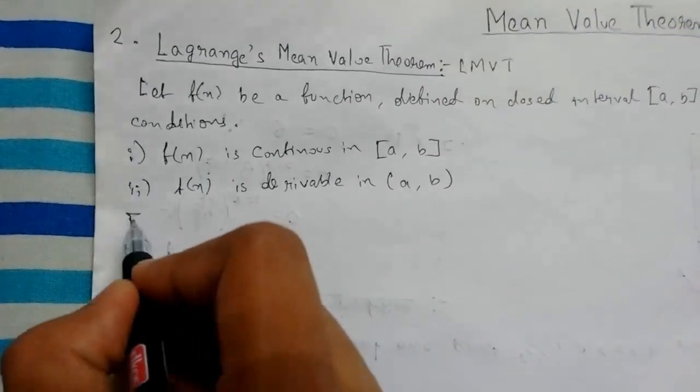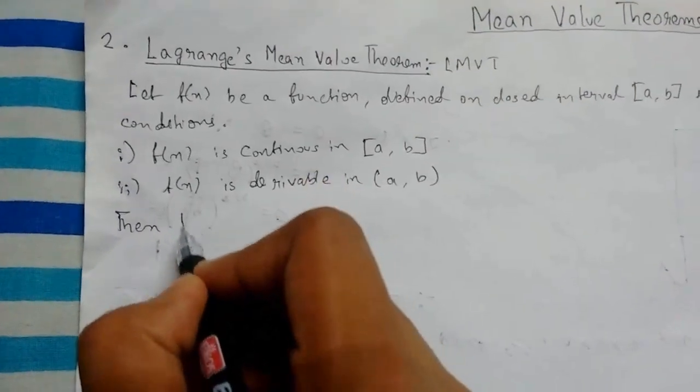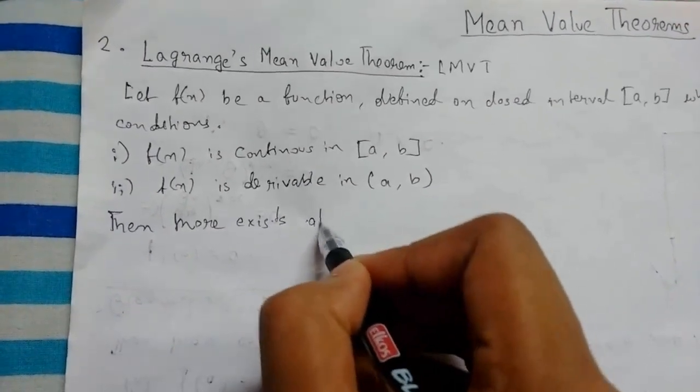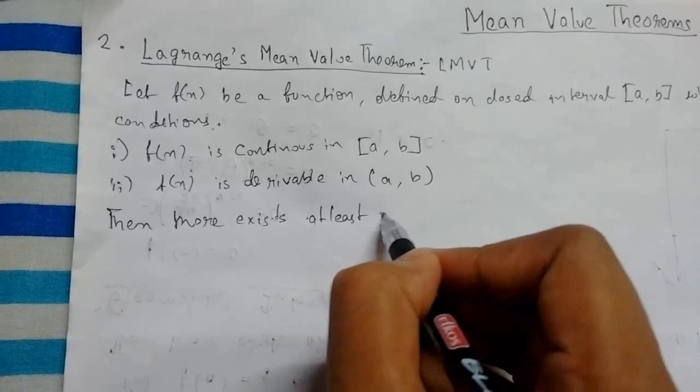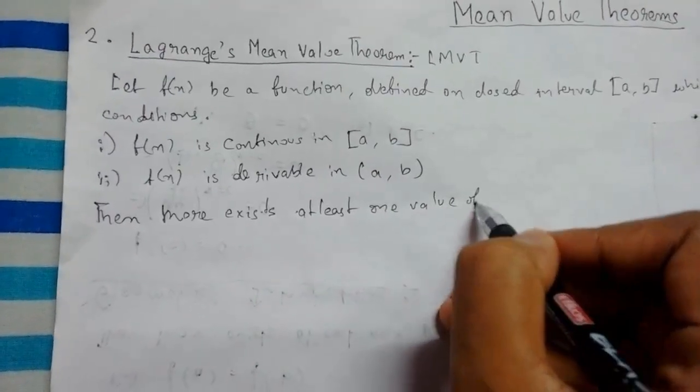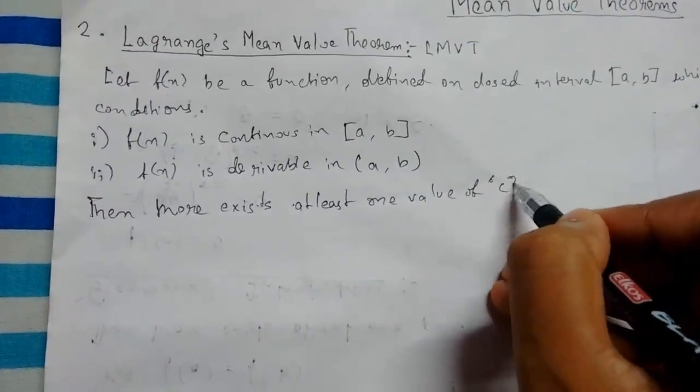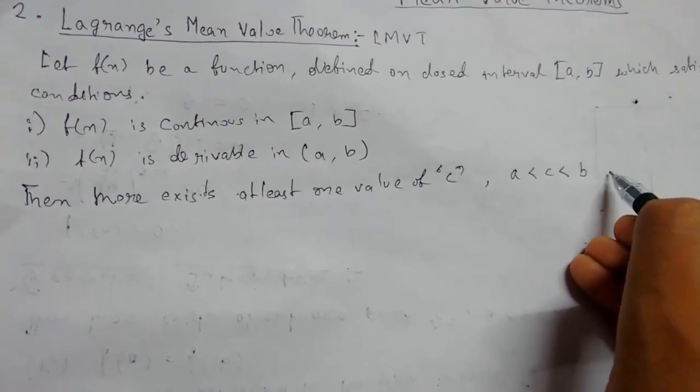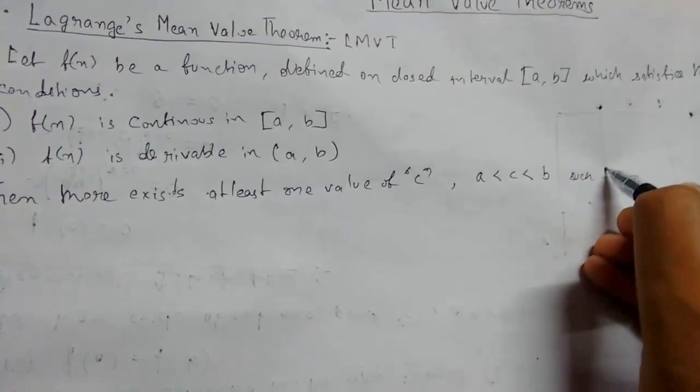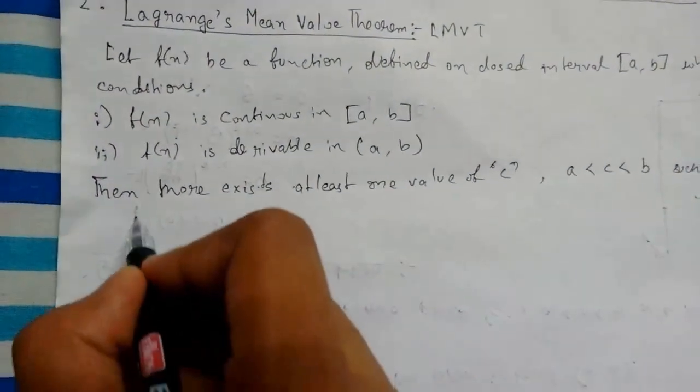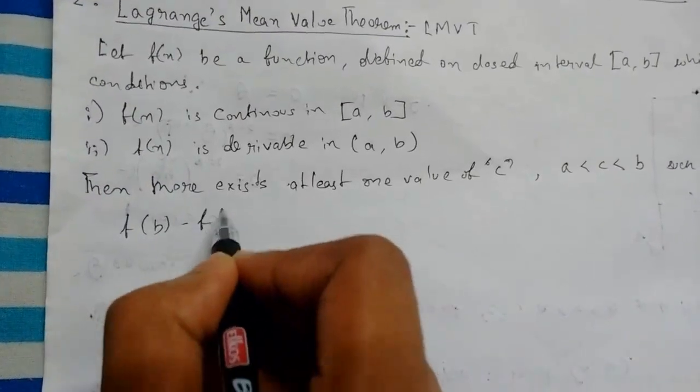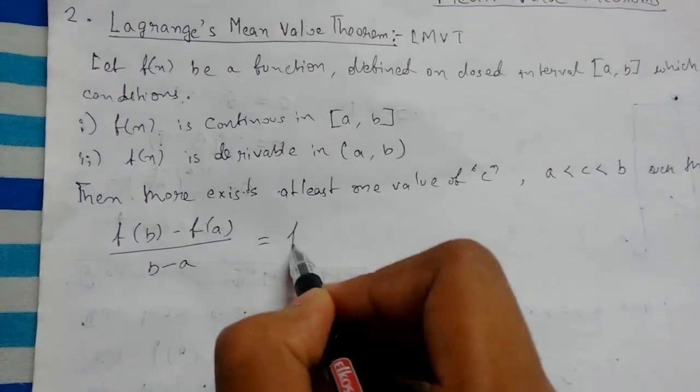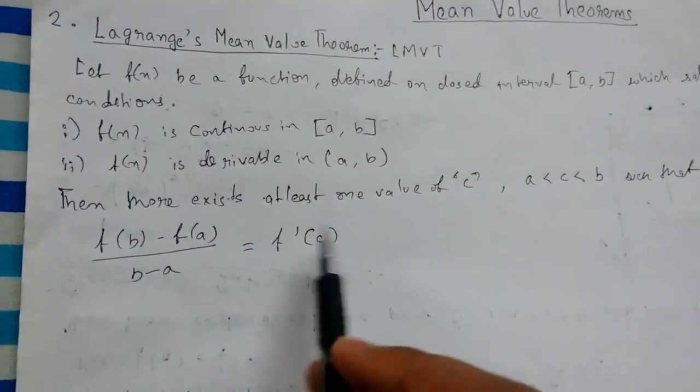Then we get our result as: then there exists at least one value of c, which is a < c < b, such that [f(b) - f(a)] / (b - a) will be equals to f'(c). This is our result.